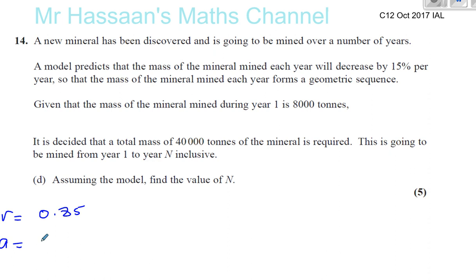Given that the mass of the mineral mined during year 1 is 8,000 tons, the first term A is 8,000. It's decided that a total mass of 40,000 tons of mineral is required. We need to find the sum for N - the number of years it takes to get a total sum of 40,000 tons.